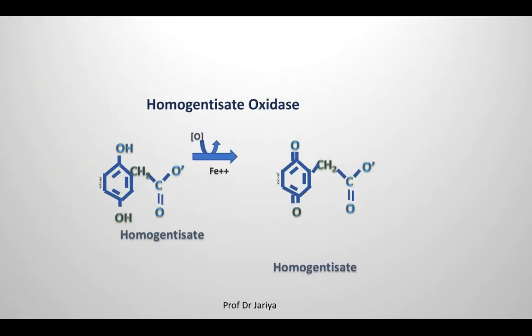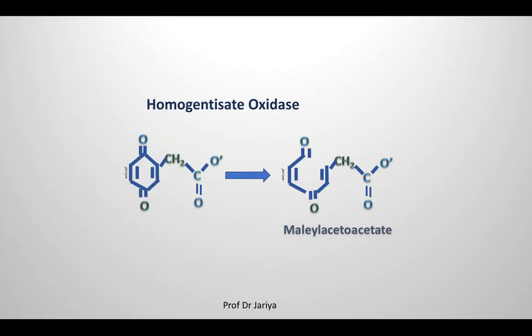Homogentisate is oxidized by homogentisate oxidase. Homogentisate oxidase converts homogentisate into maleylacetoacetate. This is the block in alkaptonuria — homogentisate is not converted to maleylacetoacetate. Here we can see the formation of maleylacetoacetate is impaired.